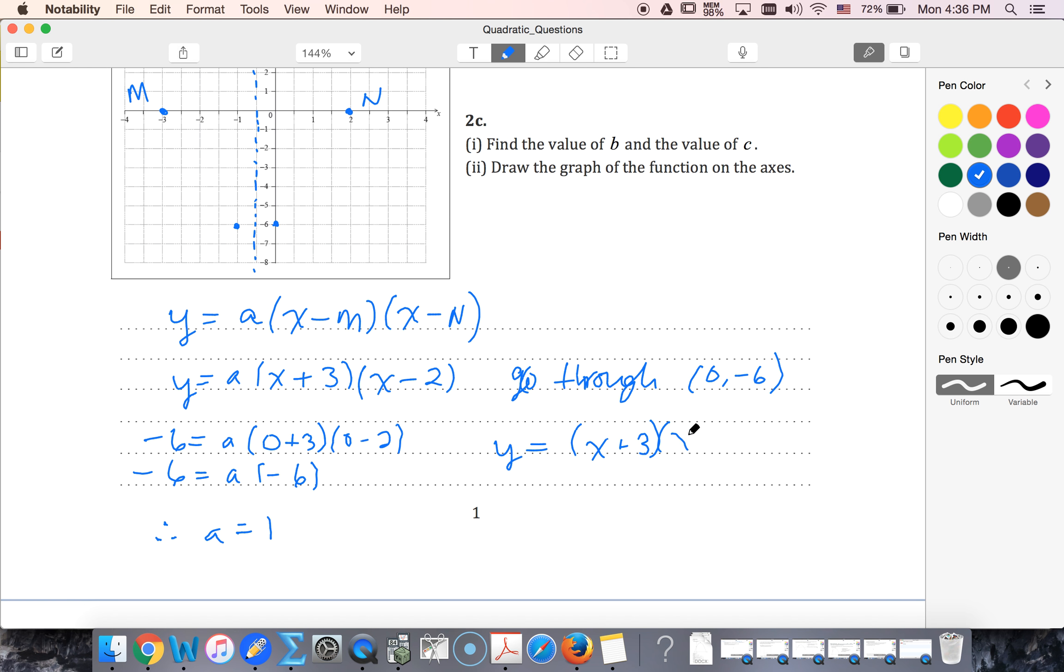If I multiply this out, I get x squared plus x minus six as my equation. That tells me that my b value is one, my c value is negative six. I know that my axis of symmetry down here is when x is negative a half.